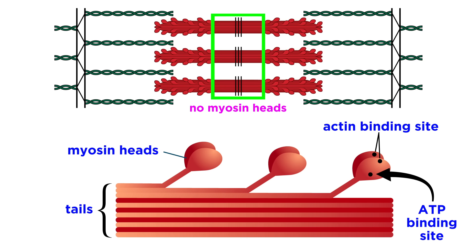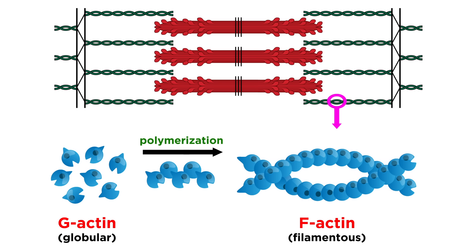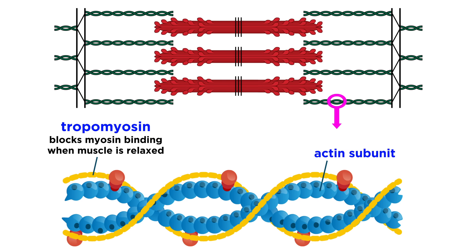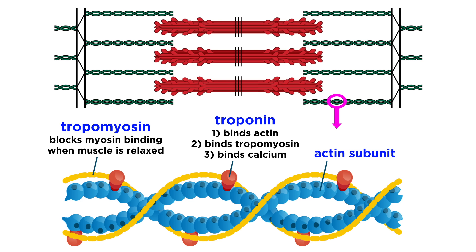As we said, the thin filaments are made predominantly of actin, and two actin filaments will twist together to form the backbone of the thin filament. Each actin subunit has an active site where myosin can bind, and when a muscle fiber is relaxed, these are blocked by spiraling strands of tropomyosin. There is also troponin, a globular complex of three polypeptides, one of which binds to actin, one of which binds to tropomyosin, and one of which binds calcium.